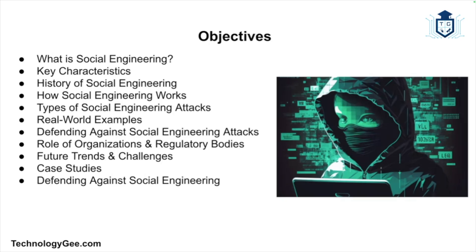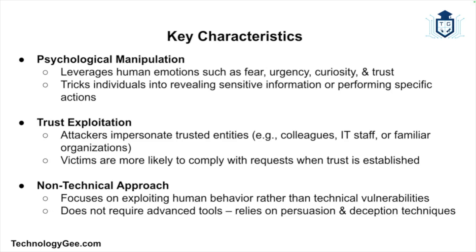Social engineering is a manipulation technique that exploits human error to gain private information, access, or valuables. In the context of cybersecurity, it involves tricking individuals into breaking normal security procedures and divulging confidential information or gaining unauthorized access to systems. Key characteristics include: psychological manipulation, where attacks rely on psychological tactics; trust exploitation, where attackers impersonate trusted entities; and a non-technical approach that exploits human vulnerabilities rather than software vulnerabilities.